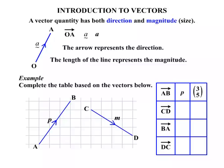We need to complete the table based on the vectors below. Now the first row is complete. We have vector AB, which is denoted by P, 3, 5. What does that mean? That means we go across 3 and up 5. So that's the three ways of denoting that particular vector.